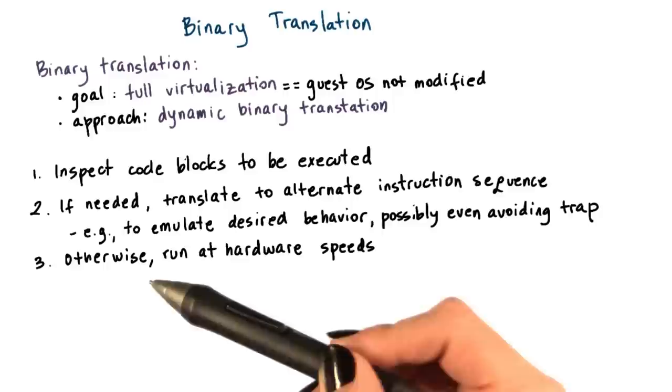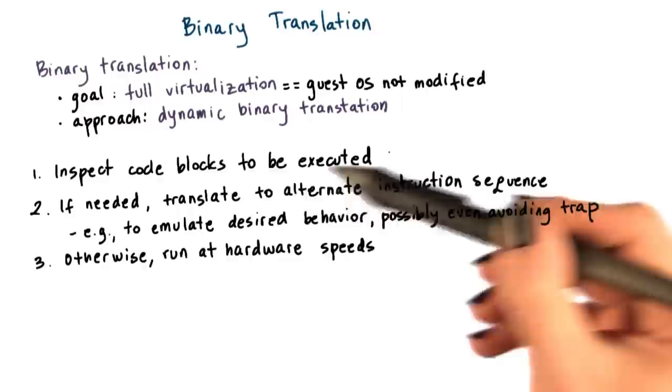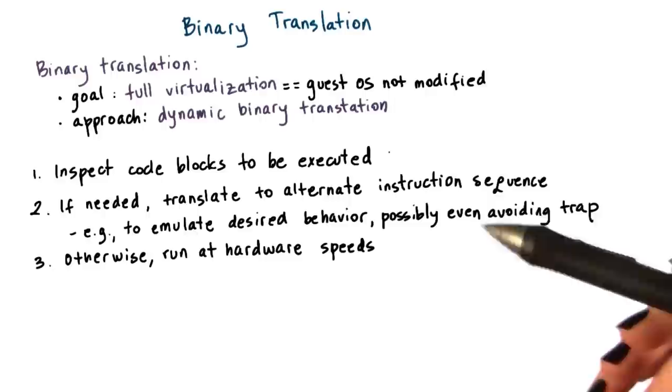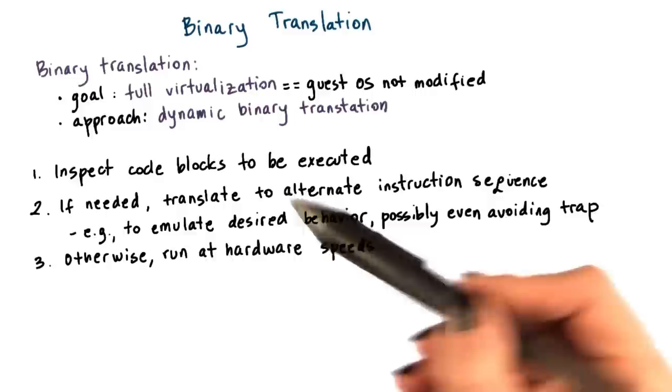If one of the bad instructions is found in the code block, that particular instruction is translated into another instruction sequence that avoids the undesired instruction and emulates the desired behavior. This can possibly be achieved by bypassing a trap to the hypervisor.